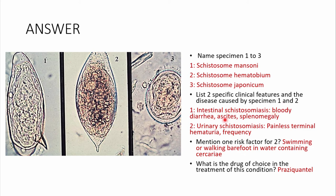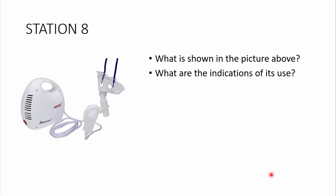Schistosoma mansoni causes intestinal schistosomiasis, presenting as bloody diarrhea, ascites, or splenomegaly due to liver fibrosis. Schistosoma haematobium causes urinary schistosomiasis, presenting with terminal hematuria and frequency. One risk factor for haematobium is swimming or walking barefoot in water containing cercariae, the infectious larval stage. The drug of choice is praziquantel.